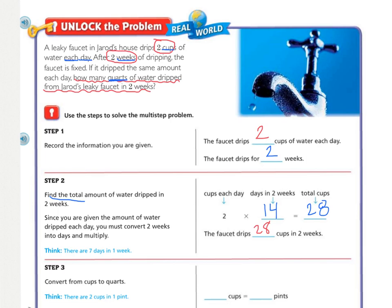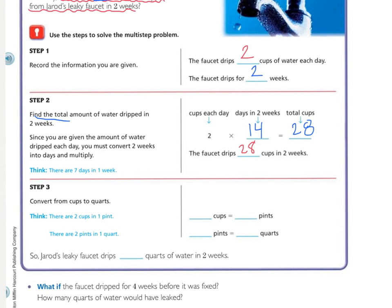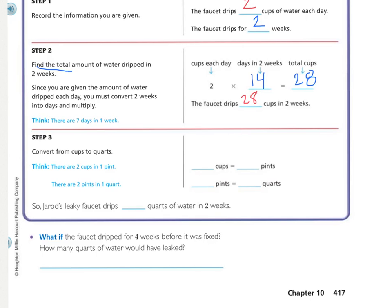But we're not done yet because what measurement did they want our answer in? They didn't want the number of cups. They wanted the number of quarts. How many quarts were dripped? So that means that we have a second step, another conversion that we need to do.